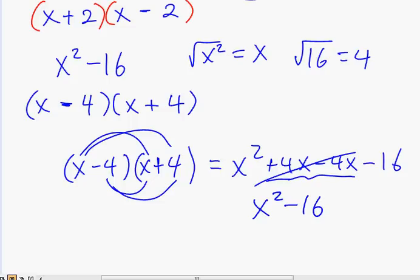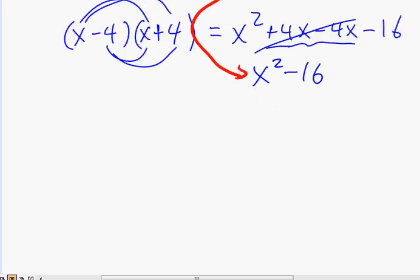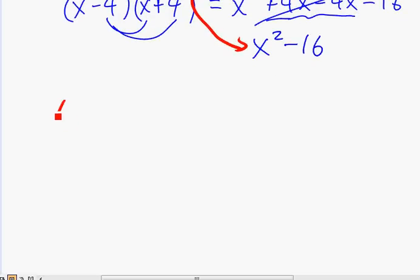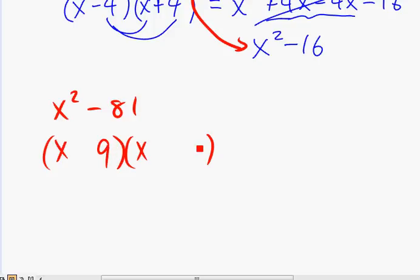So when you multiply them, this cancels. And you get x squared minus 16. And that's exactly the same as our initial problem over here. Okay. So let's do a few more. Let's say we have x squared minus 81. Well, you're good at square root. So you don't need to write it on the side. You know it's x, x. And the square root of 81 is 9 and 9. Plus, minus. And that's the factor of x squared minus 81.